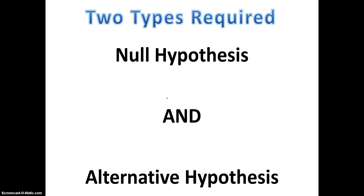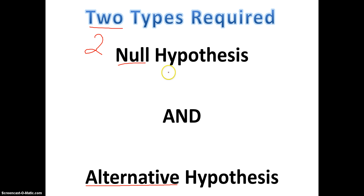The first thing you need to know is whenever you run a test, you have to write two hypotheses — you have to write the null hypothesis as well as the alternative hypothesis. I'll talk about what those mean right now.